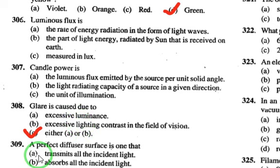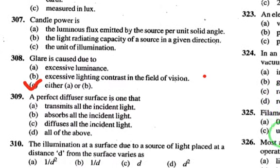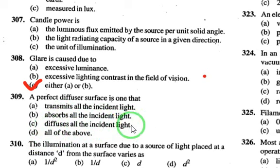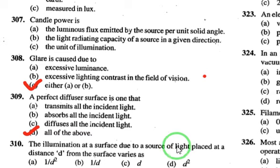A perfect diffuser surface — this is a frequently repeated question — diffuses all the incident light. But if the options include transmitting, absorbing, and diffusing all incident light, the answer is 'all of the above' — option D.